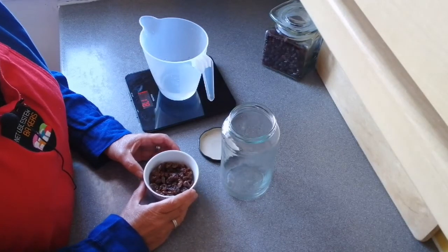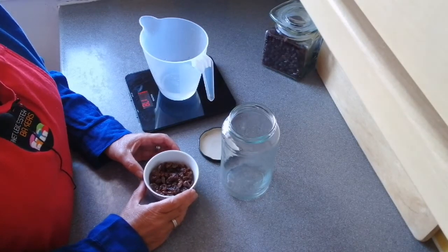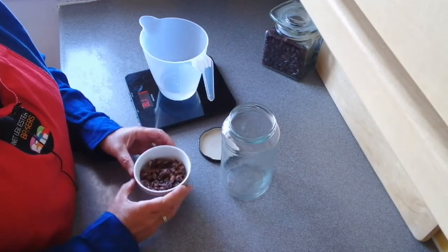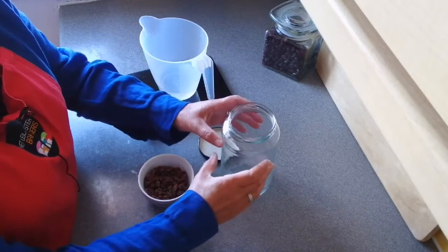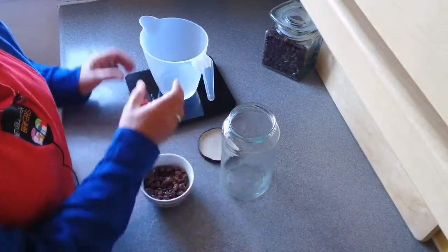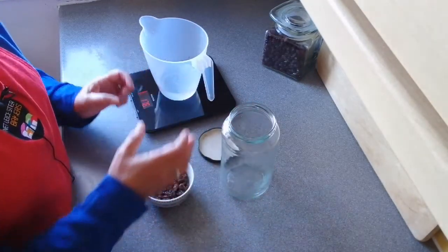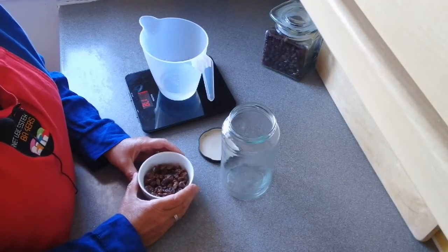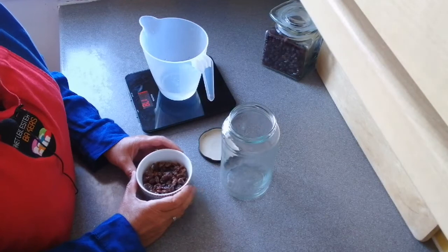For the first stage of the fermented raisin water project, you need raisins (100 grams total, though you'll only use 57 grams), a jar with a lid, and some water. If you'd like to measure out 57 grams of raisins first, that would be great.